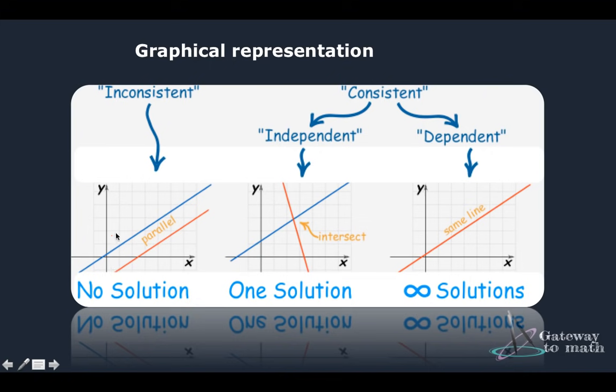So the first case: if two lines are parallel, that means they do not have any solution and that's called inconsistent. Then if two lines intersect at one point, then we have one solution and that is called independent. And then if the two lines coincide all together with each other, then they're called dependent. And independent and dependent, both the categories come under consistent equations or consistent set.